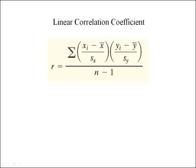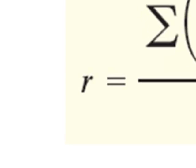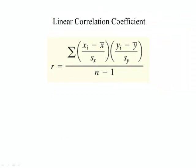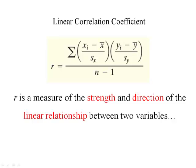And so that takes us to the Linear Correlation Coefficient. Here's the formula for the Linear Correlation Coefficient. The symbol that we use is lowercase r. Now this is a fairly messy formula, but the good news is we're never going to have to calculate this by hand. We're going to let statistical software do the calculations. But it is important to know what this is a measure of. It turns out that r is a measure of the strength and direction of the linear relationship between two variables.